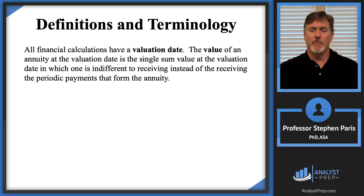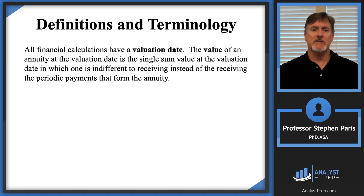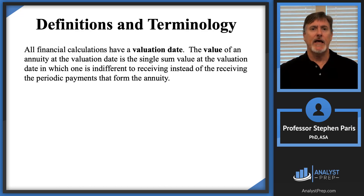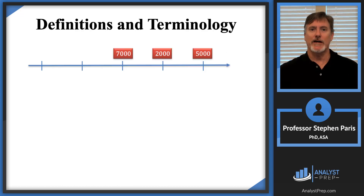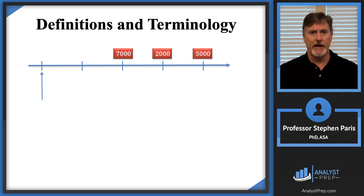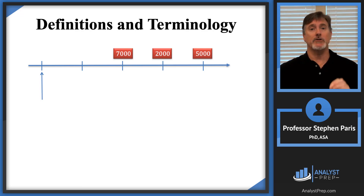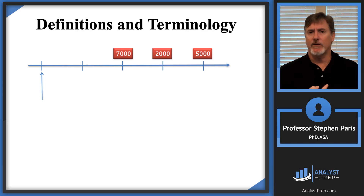Now, some more terminology. All financial calculations are going to have a valuation date. The value of an annuity at the valuation date is the single sum value at that date for which one is indifferent to receiving it instead of the periodic payments forming the annuity. Let's look at an example: a three-payment annuity with payments of $7,000, $2,000, and $5,000. The valuation date is shown by the arrow — I'll use that notation throughout. Remember, you have to know the valuation date before you can determine the value of the annuity.